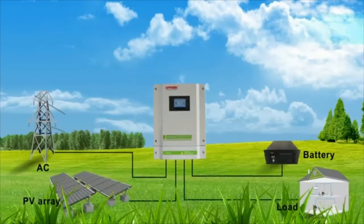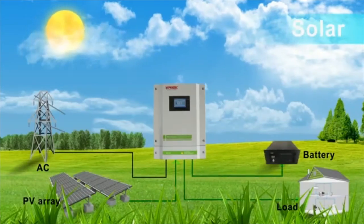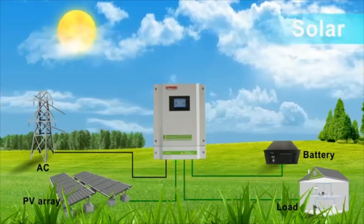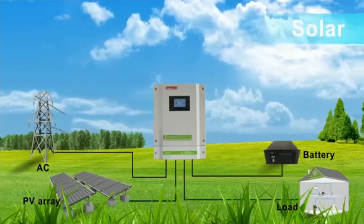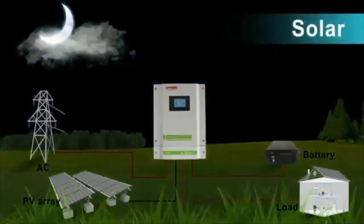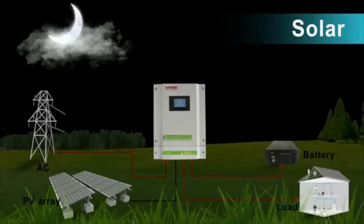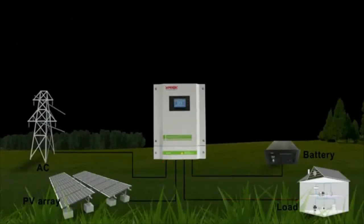Mode 1: Solar power first. If solar is insufficient, the battery will supply power at the same time. Utility provides power when solar is not available or has dropped to low-level warning voltage.